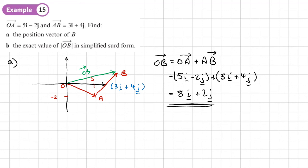And part B, find the exact value of the modulus, the length of the vector OB in simplified surd form. So the length of OB, the modulus of OB, is equal to doing Pythagoras on the 8 and the 2 of this. So that would be the square root of 8 squared plus 2 squared. So that's the square root of 64 plus 4, which is root 68.